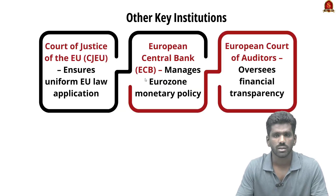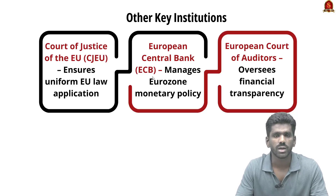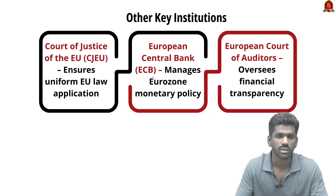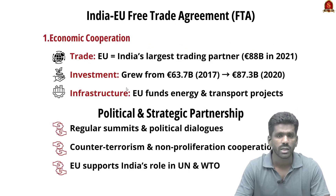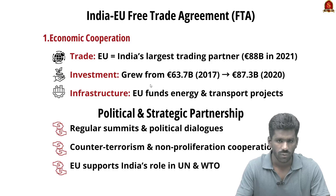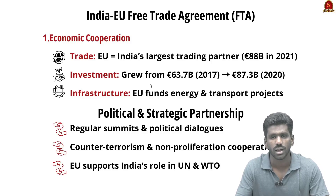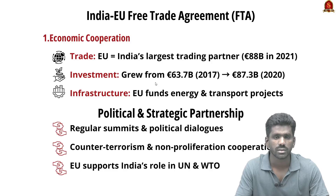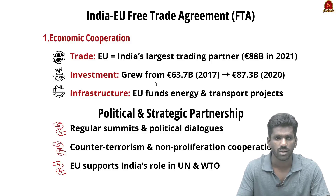Other important EU institutions include: the Court of Justice of the European Union (ensuring consistent interpretation of EU laws), the European Central Bank (maintaining price stability and managing monetary policy for eurozone nations), and the European Court of Auditors (overseeing financial management and transparency). Regarding EU-India relations, the EU is India's largest trading partner, with bilateral trade reaching 88 billion euros in 2021. The EU is also a major foreign investor in India.